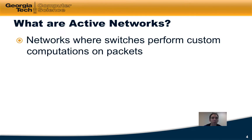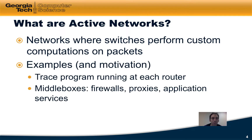So first of all, what are active networks? Simply put, active networks are networks where the switches perform custom computations on packets as the packets travel through those switches. For example, a router might perform some kind of tracing or program on packets as they travel through. Middle boxes are also an example — boxes in the network performing firewalling, proxying, application services, and so forth are all custom computations on traffic, and we can think of middle boxes as a modern-day form of active networks.